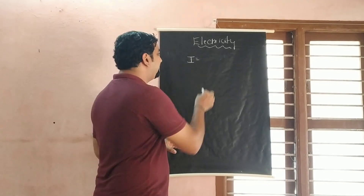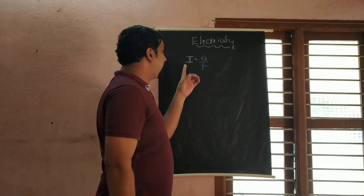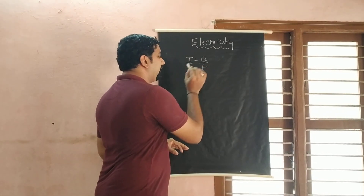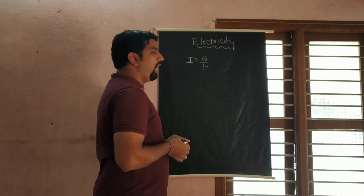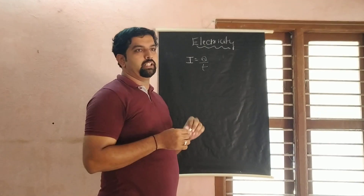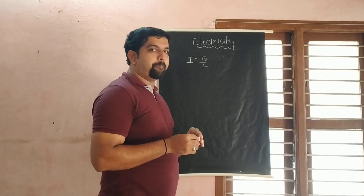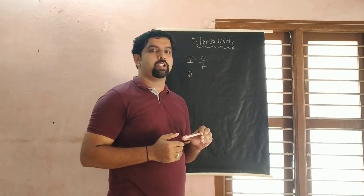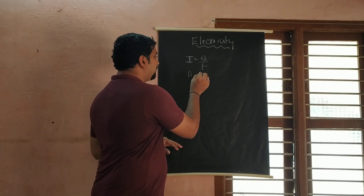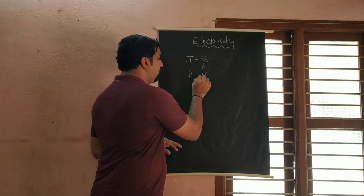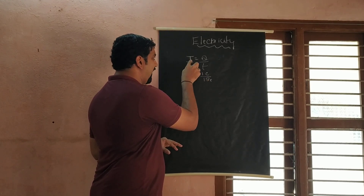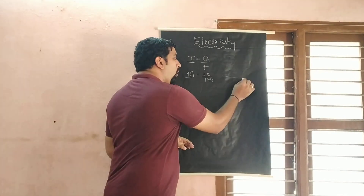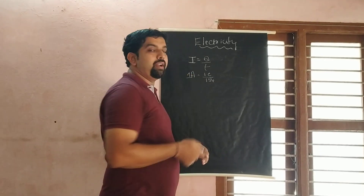We write the formula as I = Q / T. Here I is electric current, Q is the quantity of charge, and T is the time. The unit of electric current is amperes. To understand what 1 ampere is, we apply values in the formula: in place of Q we write 1 coulomb, and in place of T we write 1 second — this gives us 1 ampere. So if 1 coulomb of charge is flowing through a wire in 1 second, then it is called 1 ampere of current.